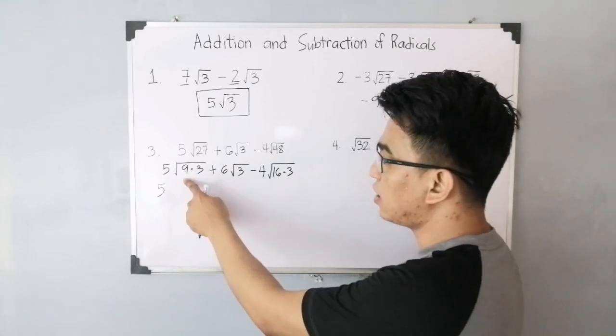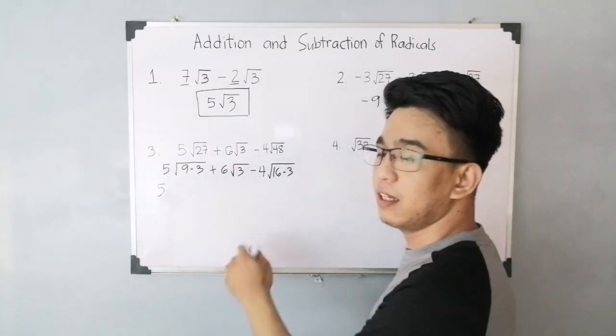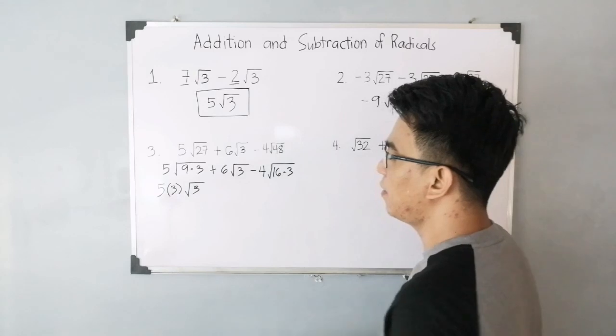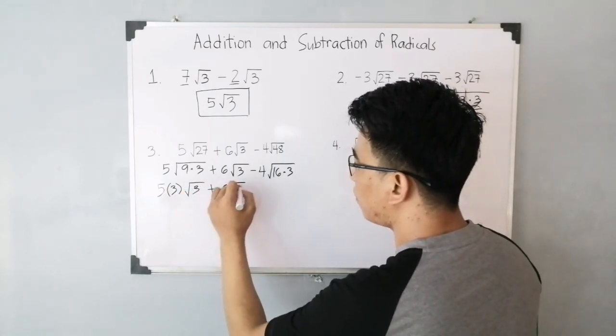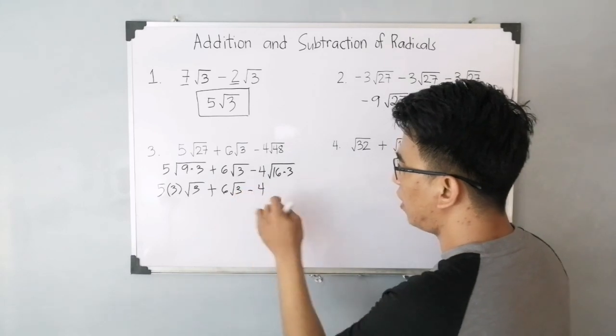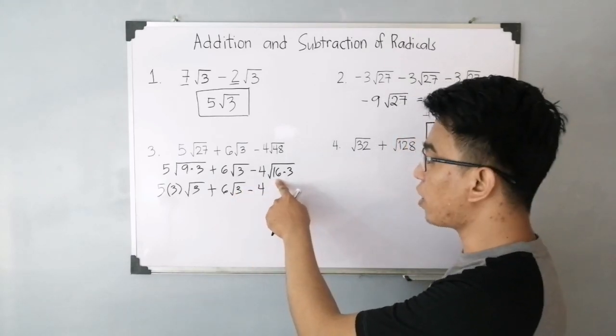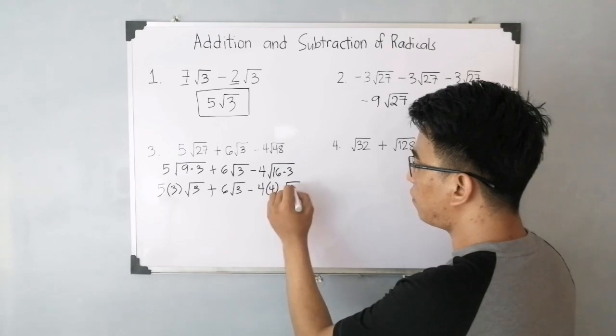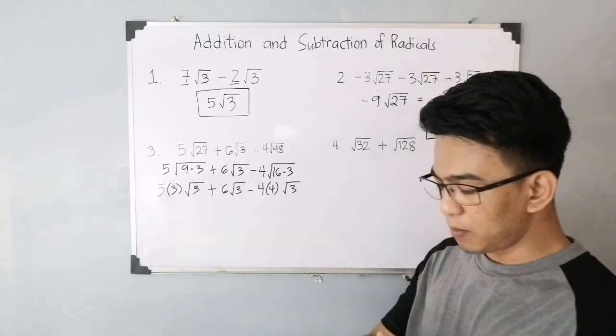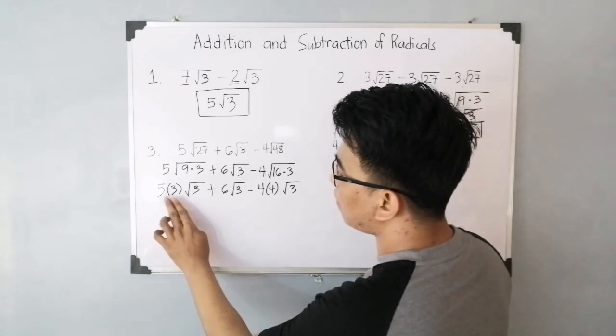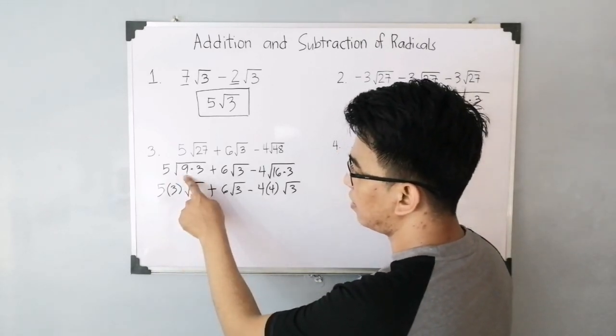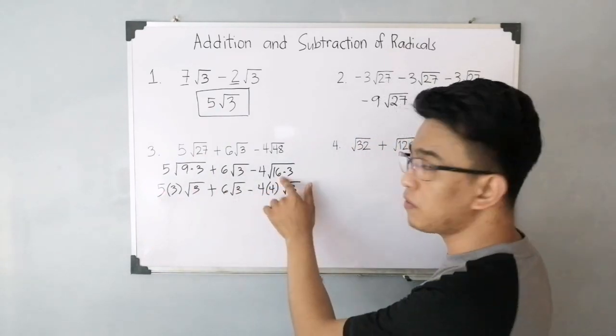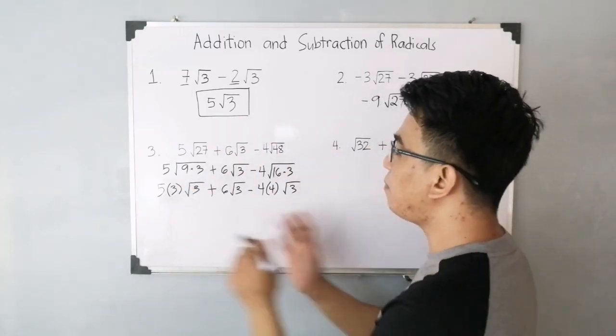You have 5, and for the square root of 9, the square root of 9 is 3. We will extract it. So it will become 5 times 3 times the square root of 3, plus 6 square root of 3 minus 4. And then for the square root of 16, that will give you 4. This will become negative 4 times 4 square root of 3. This is our actual expression. Again, let me explain. We have here a factor of 3, which came from the square root of 9. We extracted it and multiplied it. And here, the square root of 16 is 4, so we extracted it for multiplication.